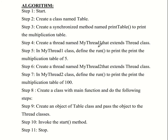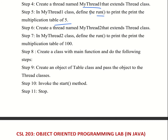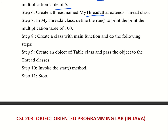Create a thread named myThread1 that extends the Thread class. In myThread1, we define the run method to print the multiplication table of 5. Next, create a thread named myThread2, which also extends the Thread class. In myThread2, we define the run method to print the multiplication table of 100.